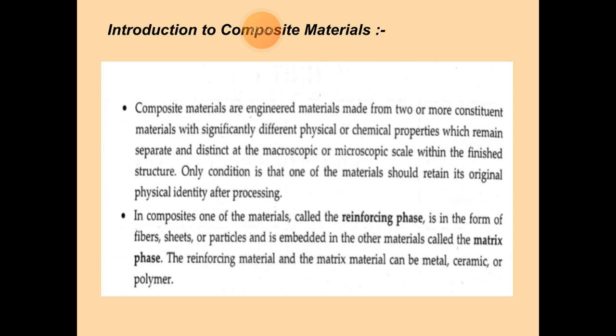Composite materials are engineering materials made from two or more constituent materials with significantly different physical and chemical properties. They remain separate and distinct at the microscopic or macroscopic scale within the finished structure.